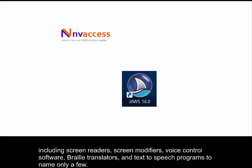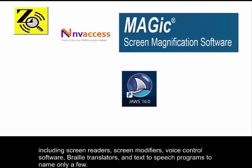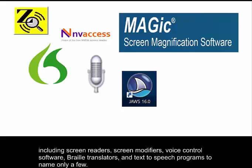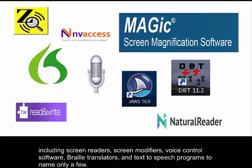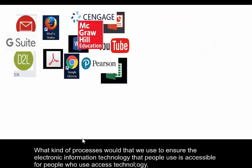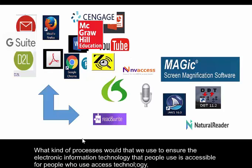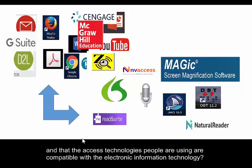There are a lot of programs that individuals with disabilities and others use to interact with these mediums, including screen readers, screen modifiers, voice control software, braille translators, and text-to-speech programs, to name a few. What kind of processes would we use to ensure that the electronic information technology people use is accessible, and that the access technologies people are using are compatible with the electronic information technology?